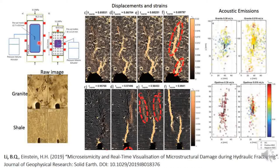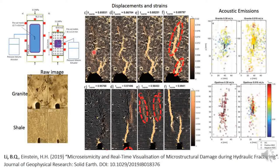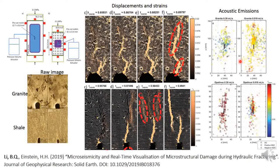We generate fractures by injecting fluid into a pre-cut notch in the rock, which is set up as a prismatic specimen, and then use what is effectively a high sampling rate microscope to observe in real time the formation of microcracks. From these observations we can determine the displacements and strains, shown in the top row for the granite where the arrows represent displacements and the contours represent the principal strain, and in the bottom row for opalinus shale where again the arrows represent displacements and the contour map represents strains.